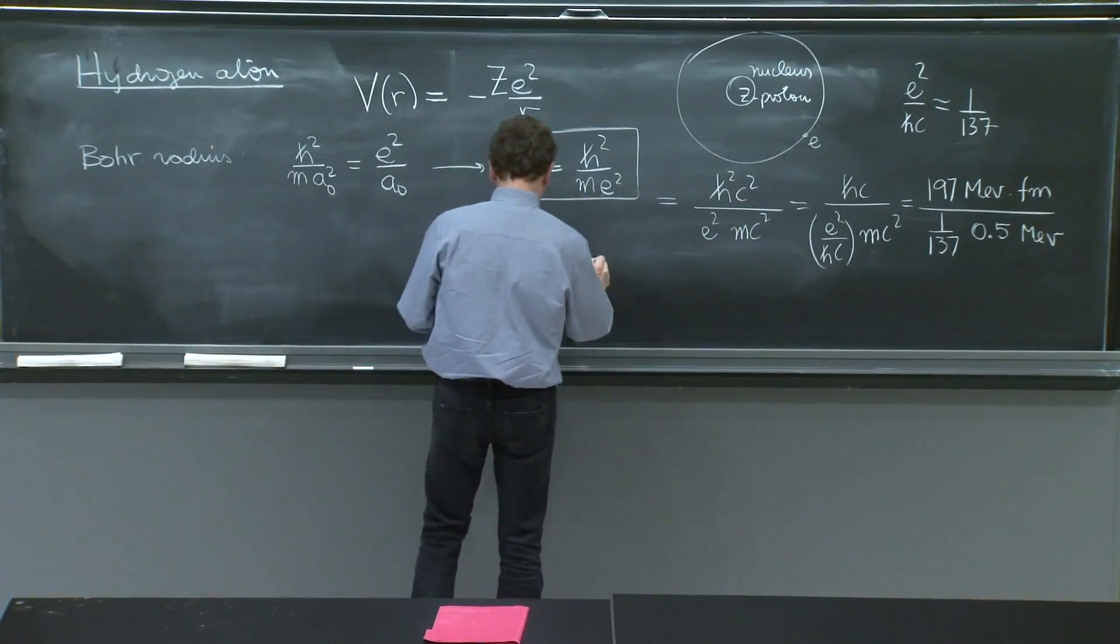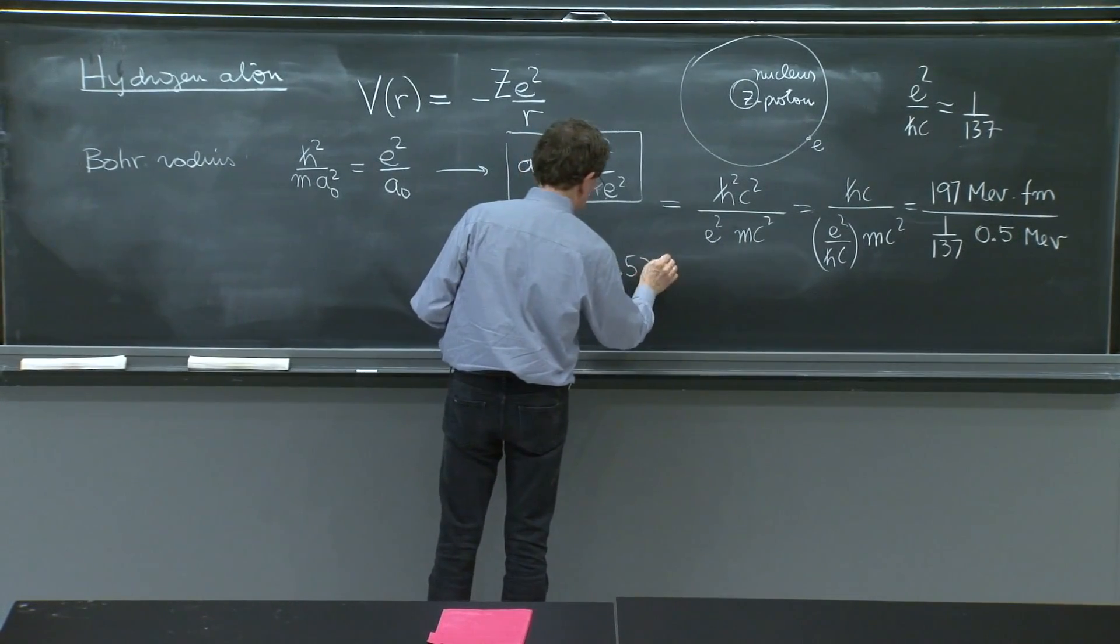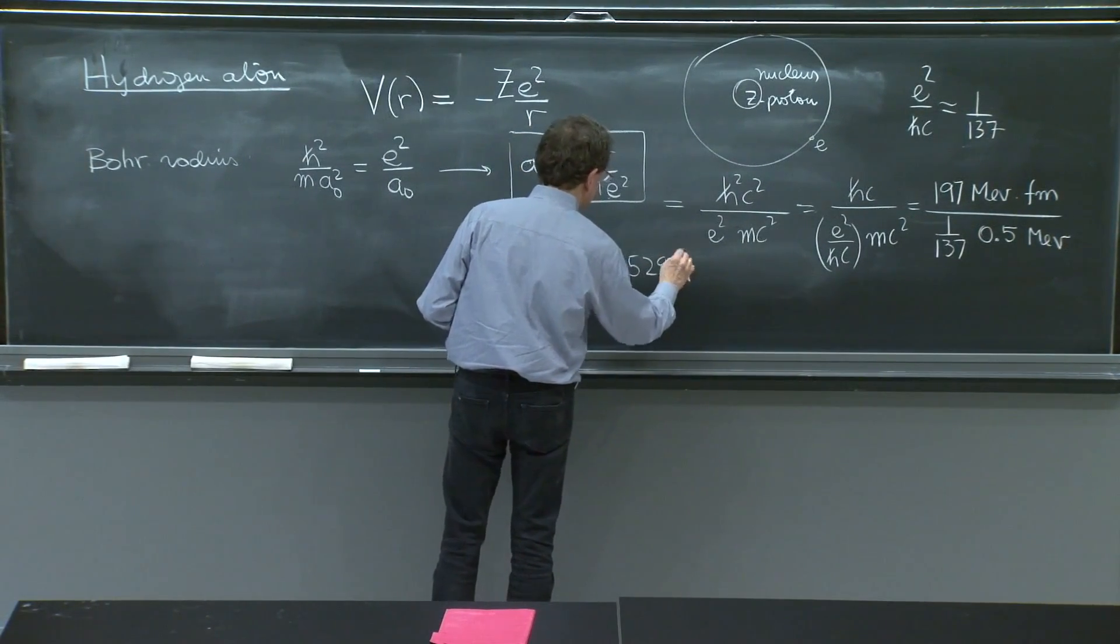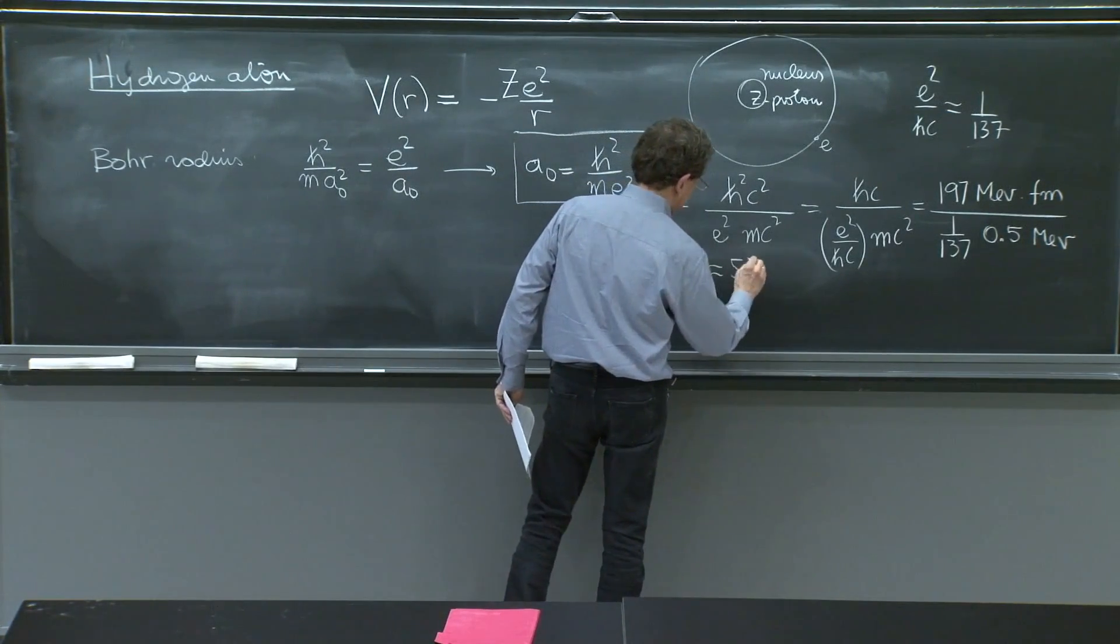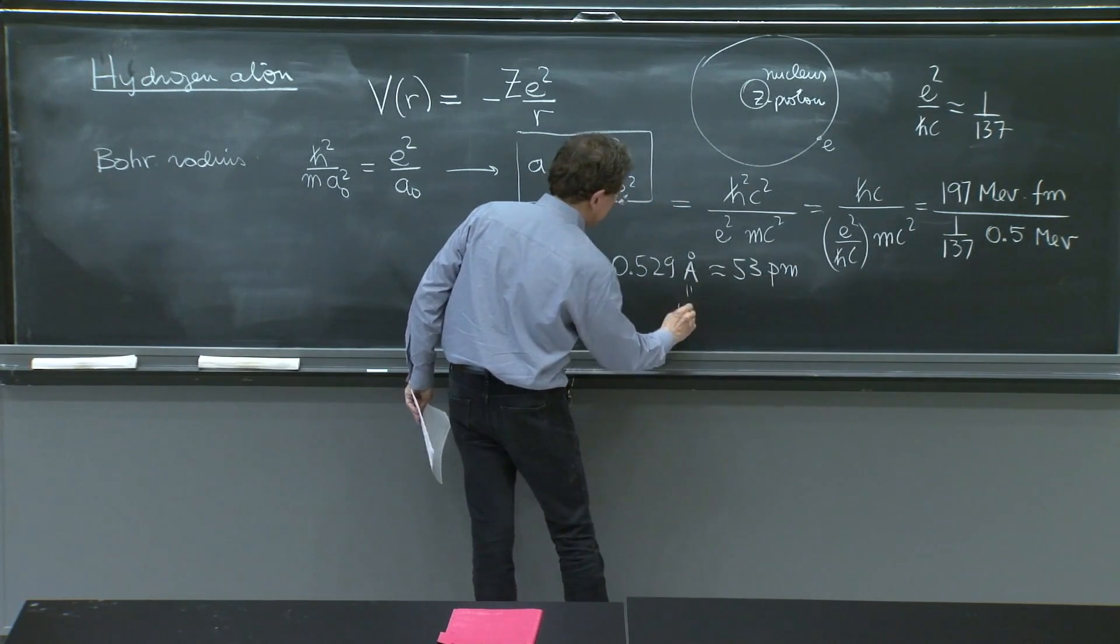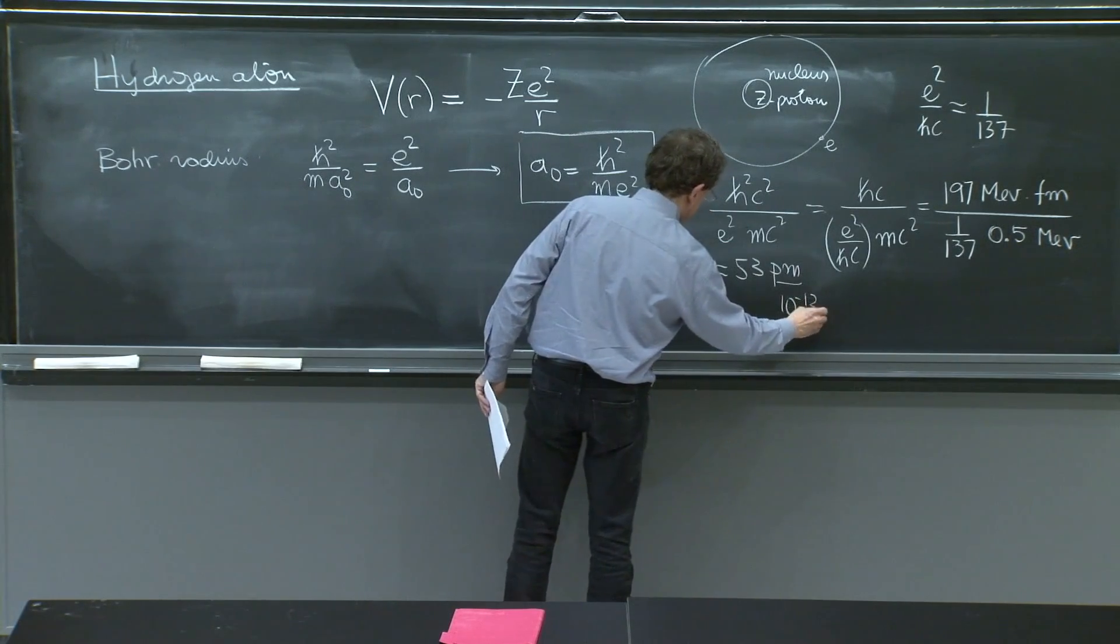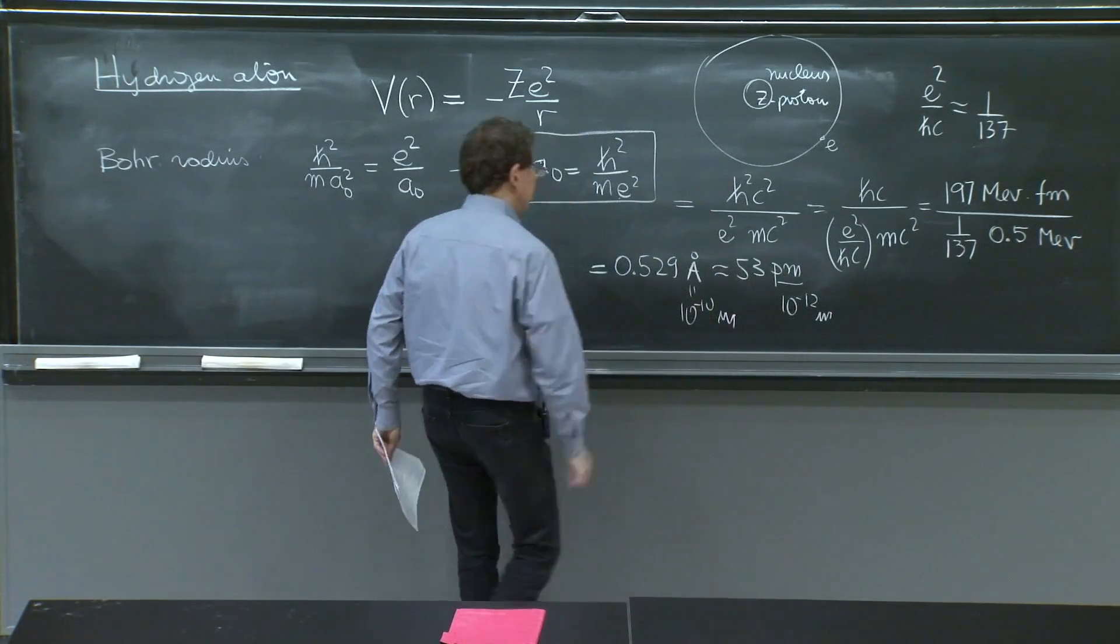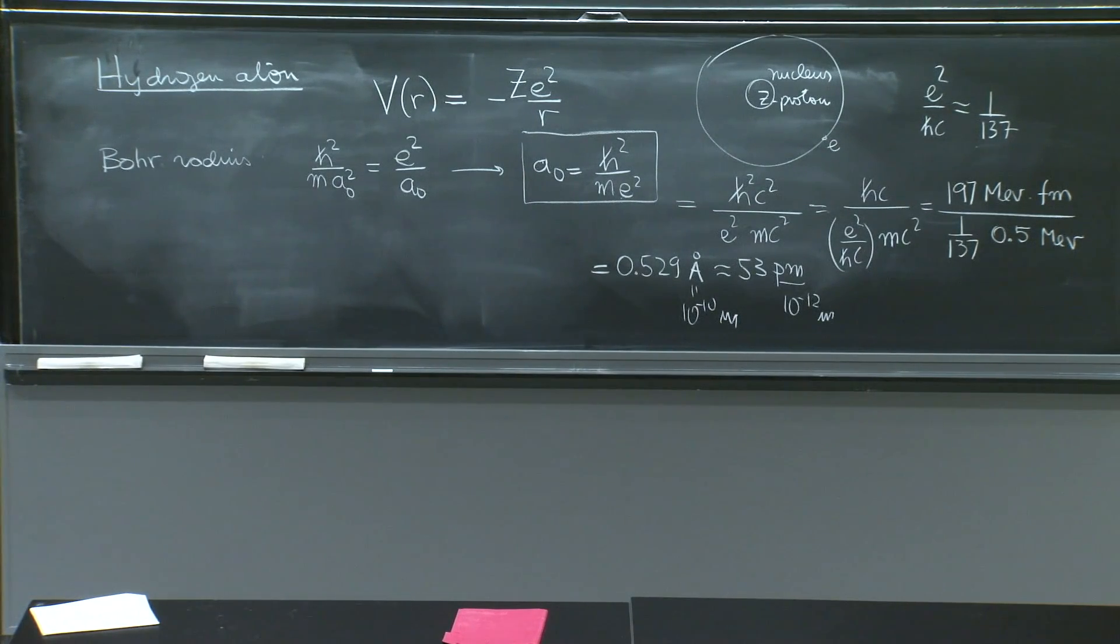I won't run the numbers. And of course, the answer is about 0.529 Angstroms, which is about 53 picometers. Angstrom is 10 to the minus 10 meters. Picometer is 10 to the minus 12 meters. So that's a length scale you've seen several times.